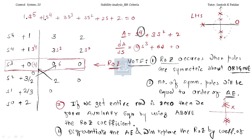And this ROZ will occur in the odd power of S rows. So when the ROZ will be in the odd rows, only then we will get the auxiliary equation of even order. If you get the entire row as zero, this is nothing but the symmetrical poles — then we will differentiate, and this is all about the process.